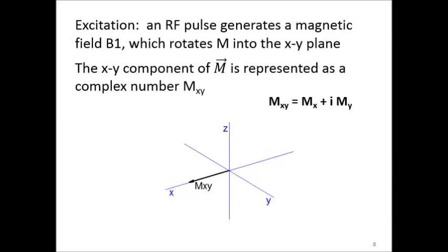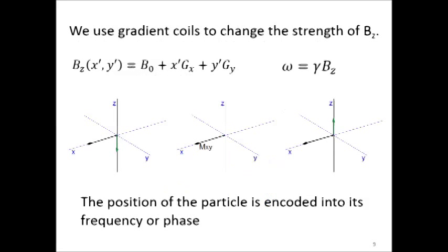The xy component of the particle's magnetic vector is represented as a complex number, mxy. The x component is the real part, and the y component is the imaginary part. Doing this will allow us to mathematically represent rotations later on, simply by multiplying with a complex exponential.